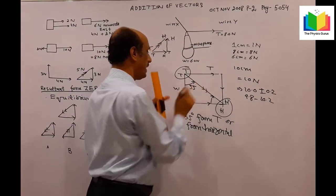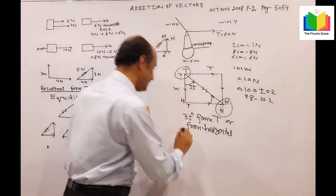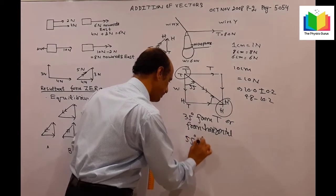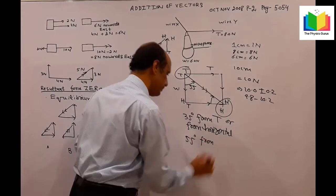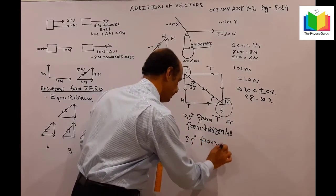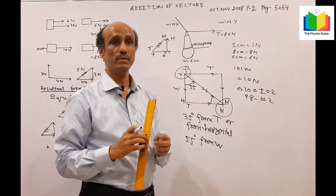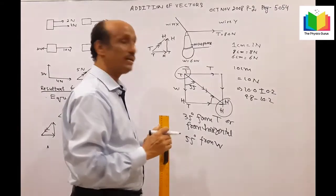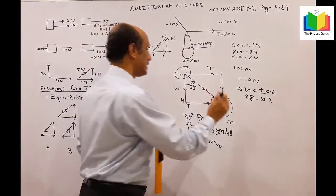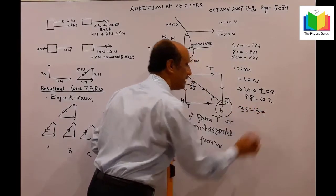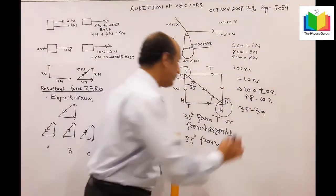The resultant angle can be written in another form as well because this is the other force W. Now this angle will be 55 degrees. I will write the other answer as 55 degrees from W. Again, there is uncertainty given in the answer, so it may vary from 35 to 39 degrees, or 51 to 55 degrees.